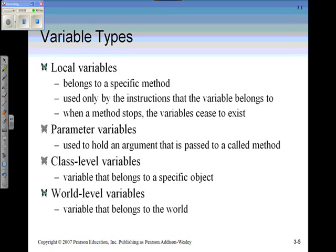The last variable type we have is the world level variable, a variable that belongs to the entire world. In terms of scope, as in how far a variable can be used, if it's a world level variable, any method and any object that's inside of your world can use that variable. On the small end of that scope, local variables can only be used by one specific method.